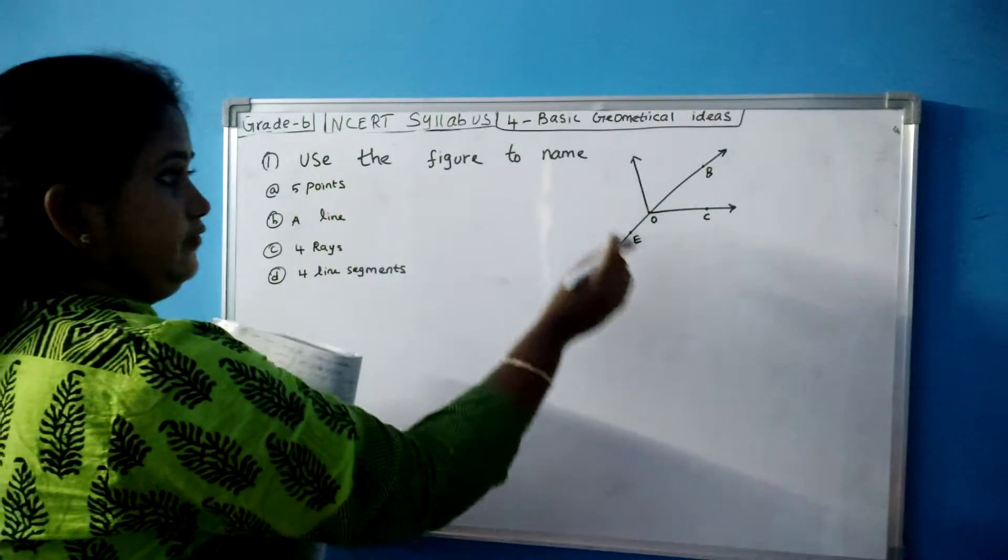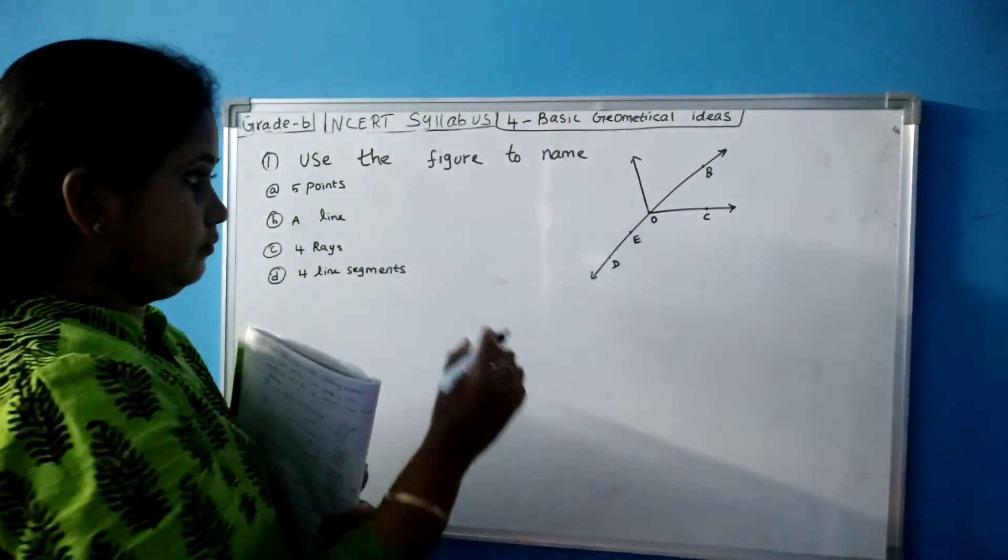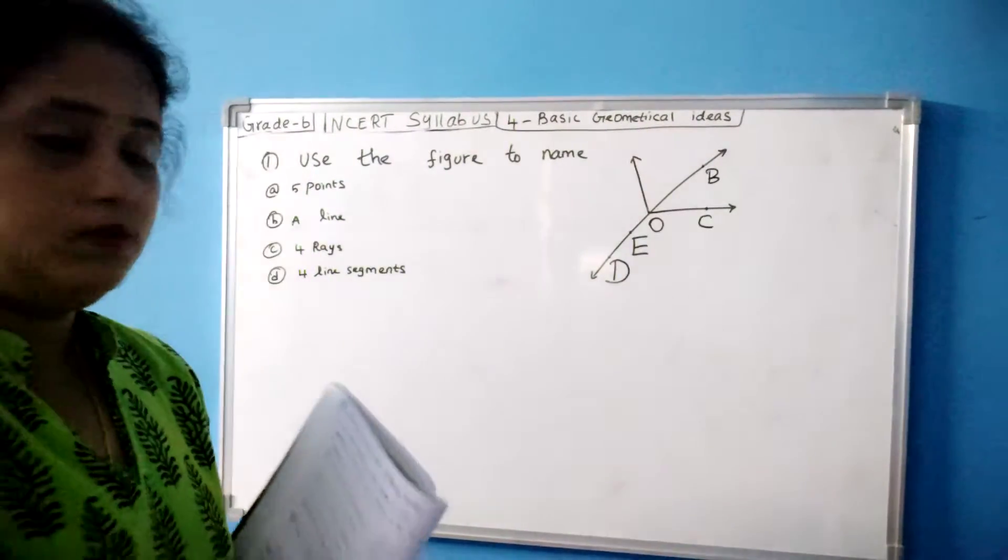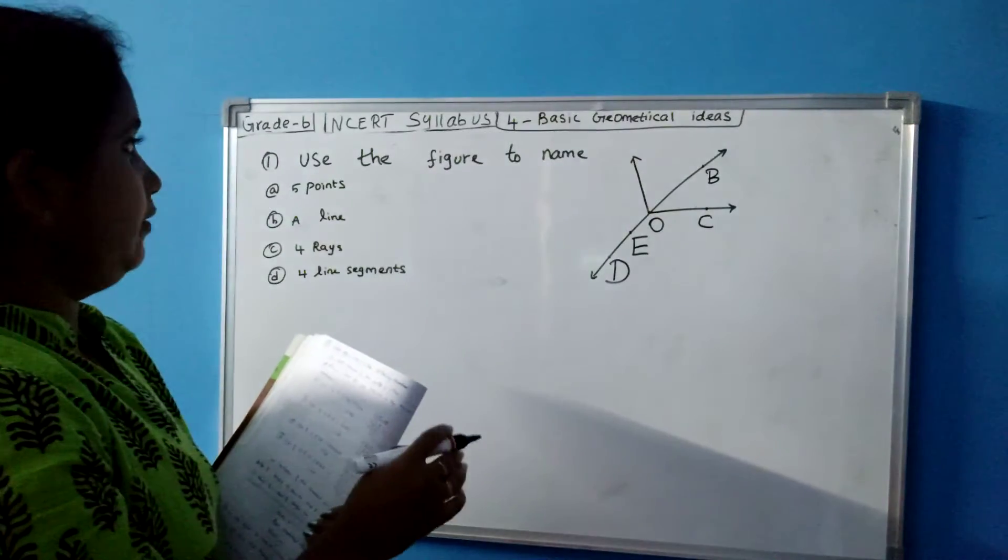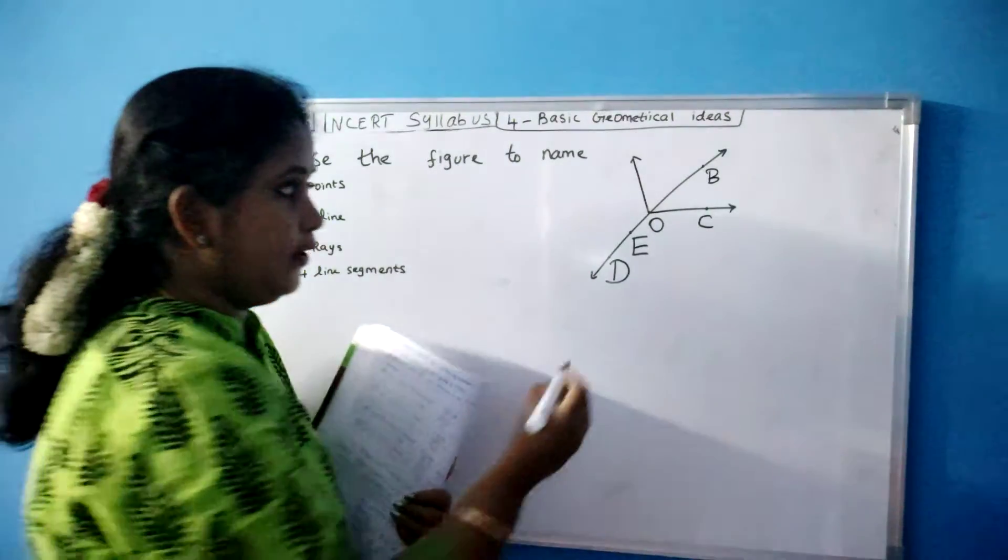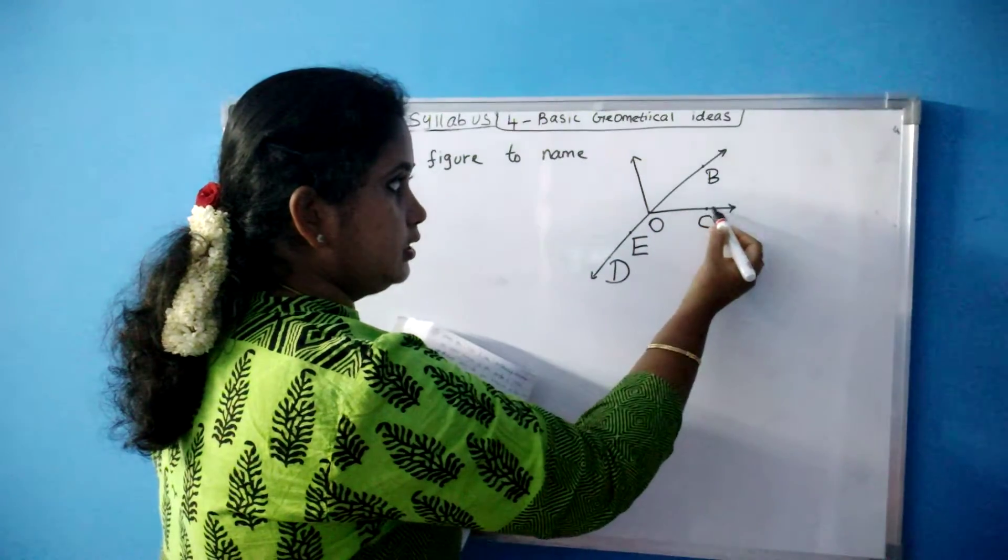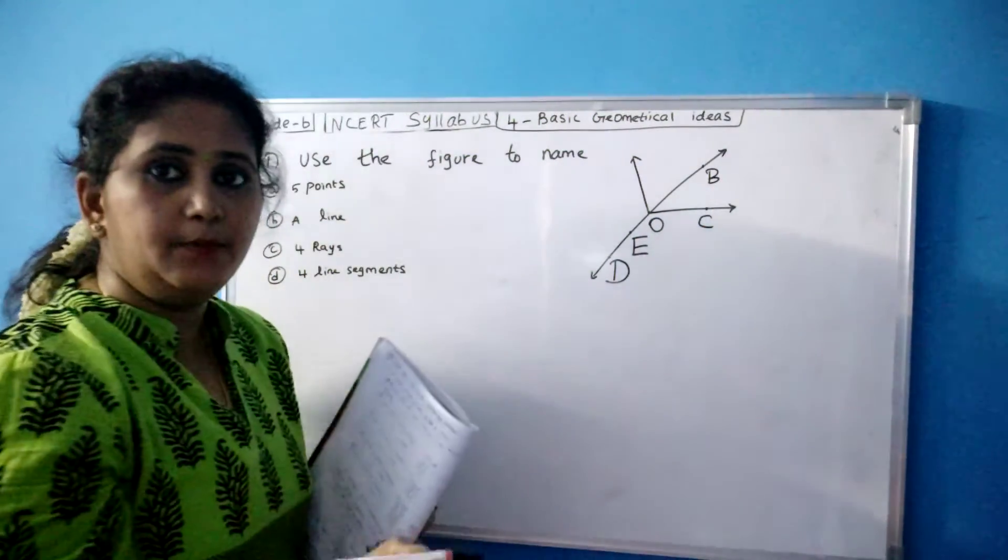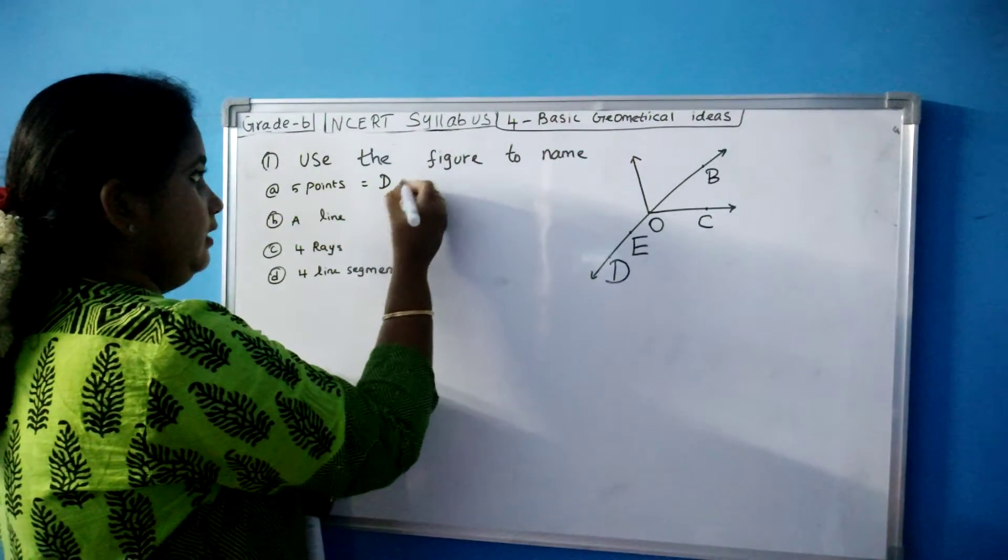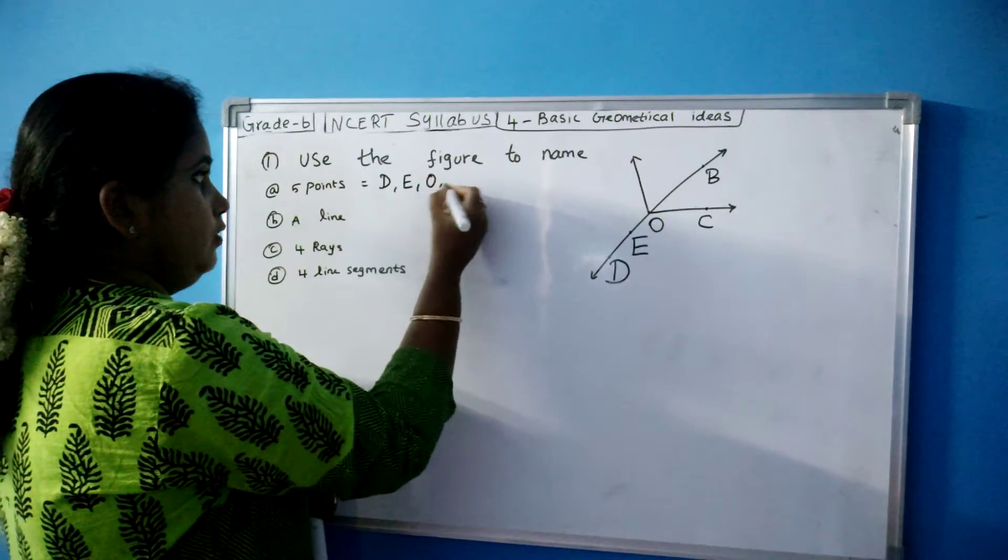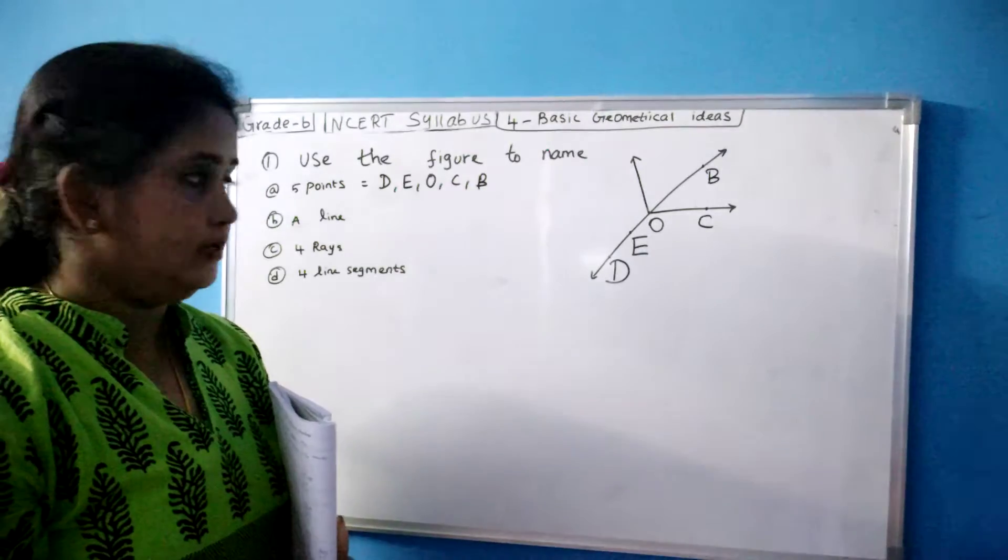Use the figure, the figure is given here, you have to name one minute. So what you have to do is you have to name 5 points. What are the points given in the figure? D, E, O, C and B. These are the 5 points on the given figure. So I am writing here D, E, O, C, B. These are the 5 points.